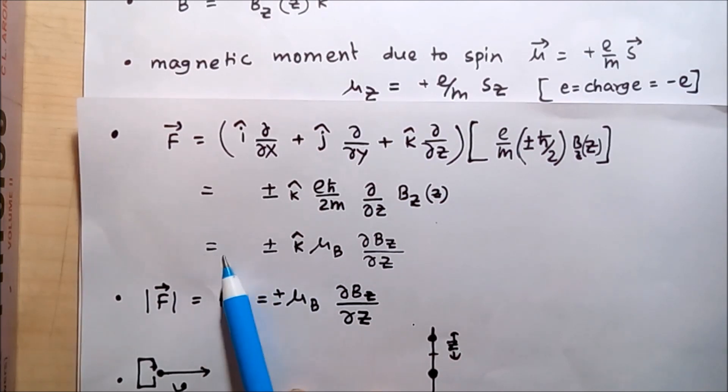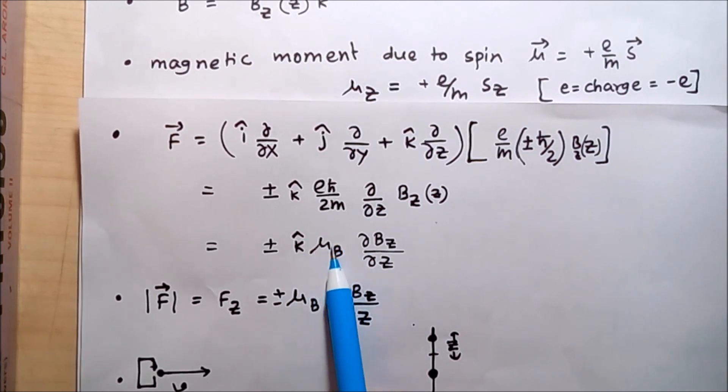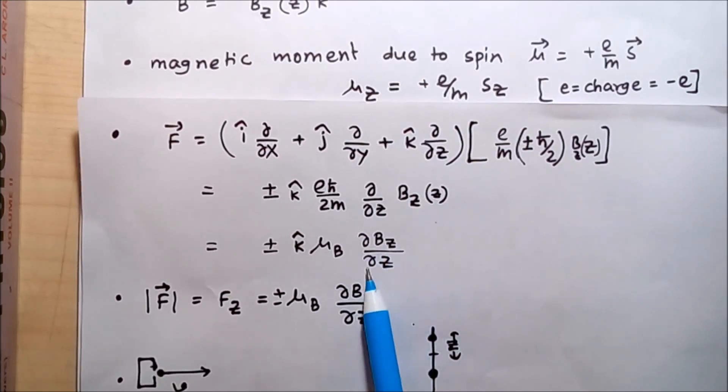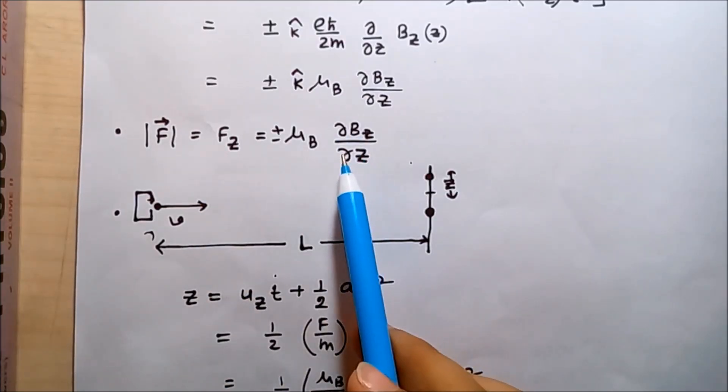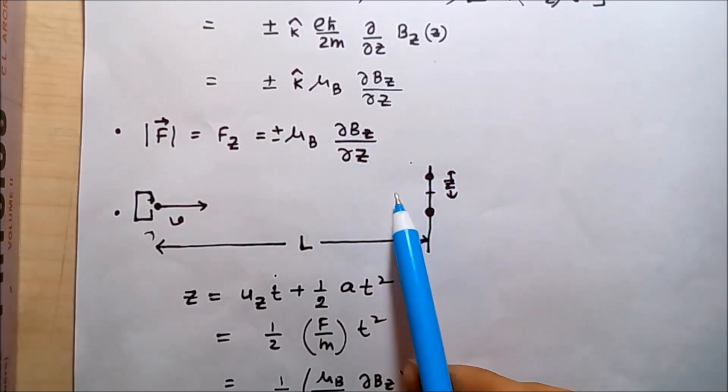So force can be written as plus minus k-hat times mu_B. Mu_B is called the Bohr magnetron and it equals e h-bar by 2m times del B_Z by del Z. This force is the cause of the deflection along the Z direction, as this is only the Z component.